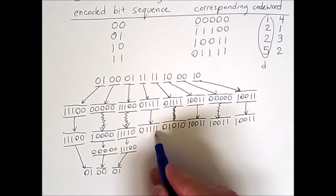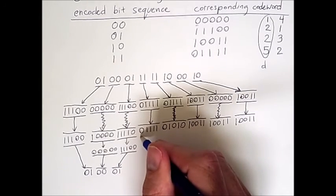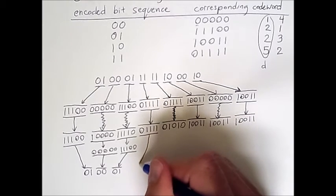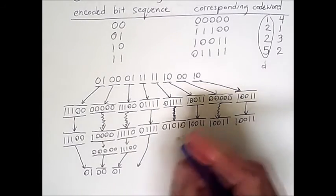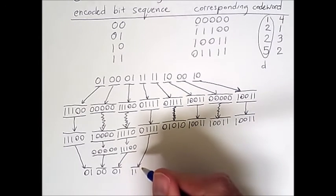Now here is another sequence. This one is a correctly received code word. So we simply use the dictionary and decode it directly to 11. No problem there.